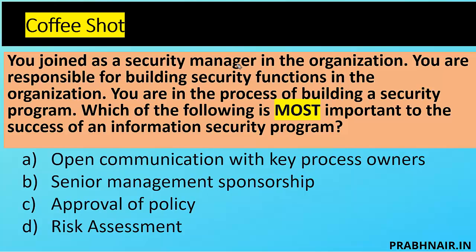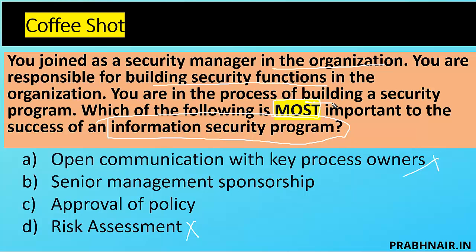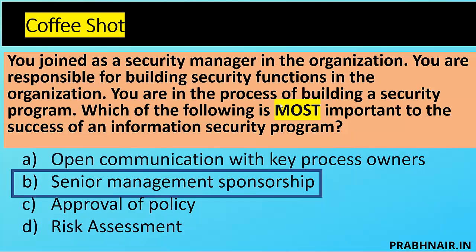Next question: you joined as a security manager, you are responsible for building a security function, and you are in the process of building a security program. Which of the following is most important to the success of the information security program? Keyword 'most' means mandatory. Option A: open communication with key process owners — we can guide them, but not most critical. Option B: senior management sponsorship — definitely required. Option C: approval of policy — required but part of B. Option D: risk assessment — done during implementation, removed. Answer is B — top-down approval is essential.